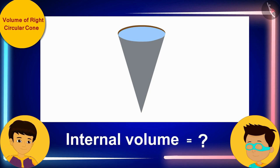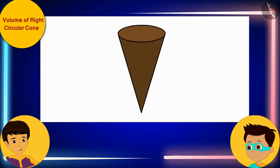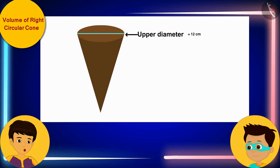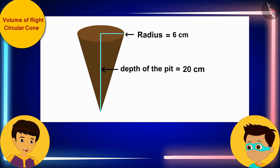I can quickly find the answer. The upper diameter of the conical pit is 12 centimeters, so its radius is 12 divided by 2, which is 6 centimeters. The depth of the pit is 20 centimeters.